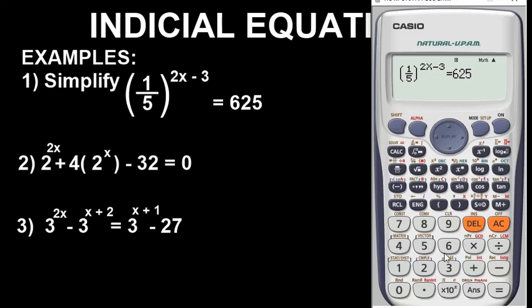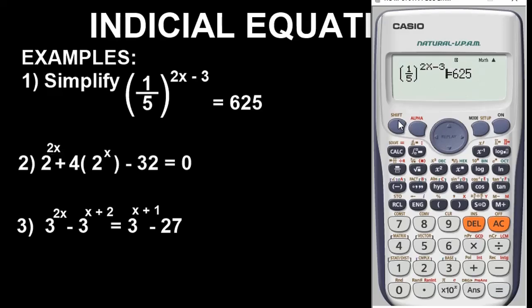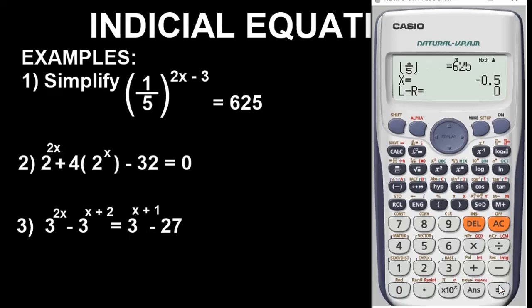Having reached this point, do not press equals directly or it will give you a math error or syntax error. To avoid that and get the answer, press Shift Calc. When you get to the prompt, I recommend you assign x to be the neutral number 0 — I have worked with it for a long time and found no errors. Press 0 and press equals. Our answer is minus 0.5, or minus 1 over 2. That's the answer to question 1.